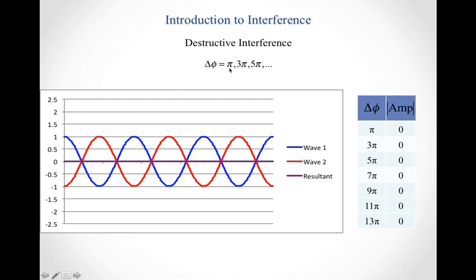The other special case is when the two waves completely cancel out. This happens when the phase difference is π — the midpoint between the two instances of constructive interference at 0 and 2π. It also occurs at 3π, 5π, and so on. Even integer multiples of π give constructive interference; odd integer multiples of π give destructive interference, where the resultant wave disappears entirely.